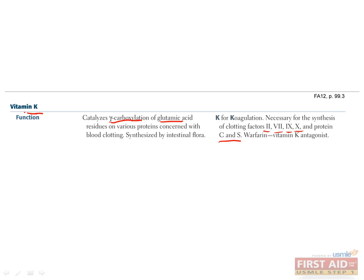This mechanism is discussed in more detail in the Heme chapter. For now, keep in mind that it involves oxidation and reduction of vitamin K, and the enzyme epoxide reductase converts vitamin K from its reduced to its oxidized form. The drug warfarin inhibits epoxide reductase, thus inhibiting the function of vitamin K, which in turn prevents the gamma carboxylation required to produce clotting factors.